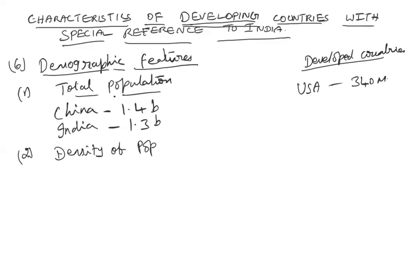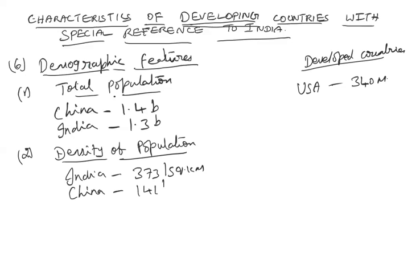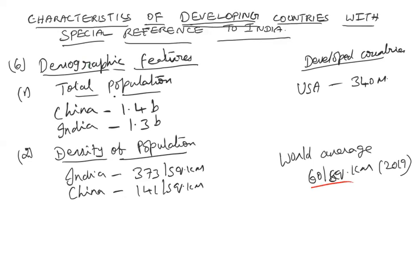Density of population is the average number of people per square kilometer. As of 2019, India's density is 373 per square kilometer and China's is 141 per square kilometer, while the world average is 60 per square kilometer — clearly showing the much higher density in underdeveloped countries.